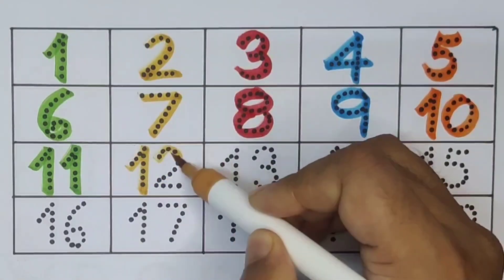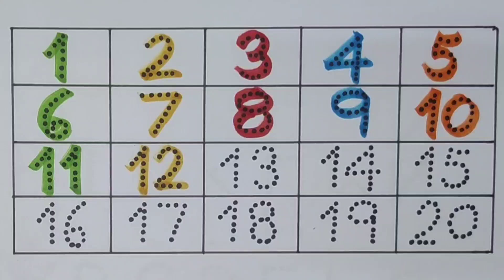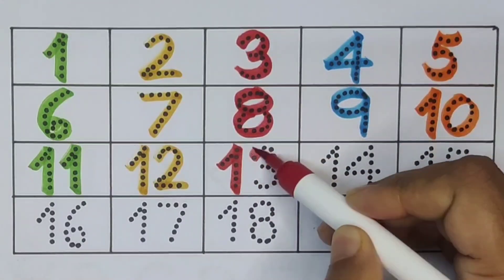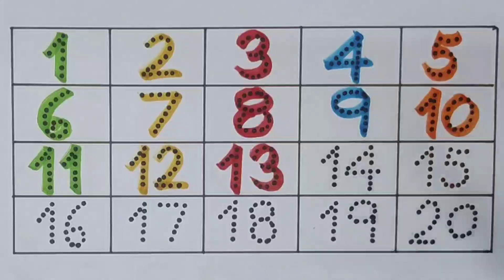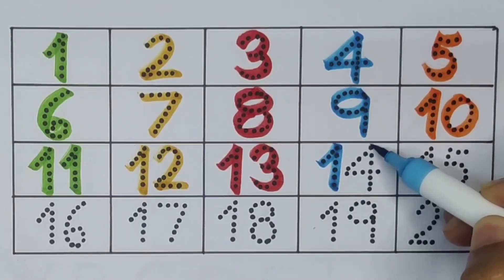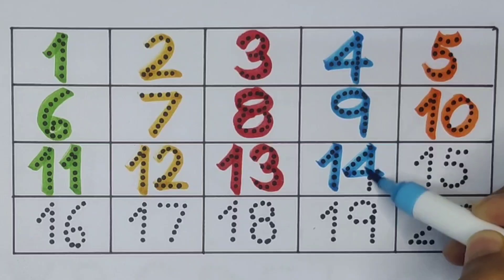Twelve, number twelve. Next, thirteen: one three, thirteen, number thirteen. Next, fourteen: one four, fourteen, number fourteen.